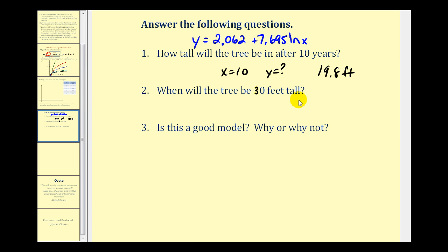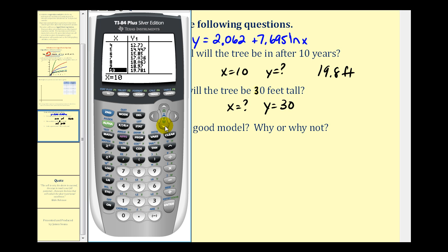Number two asks us, when will the tree be 30 feet tall? This is asking, what would x be when y equals 30 feet? One way would be to scroll down the table and look for a y value of 30. This isn't going to give us the most accurate solution. We can see here that after 38 years the tree will be approximately 30 feet tall.